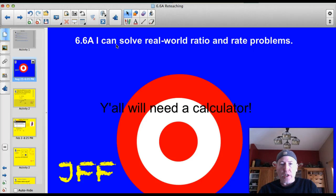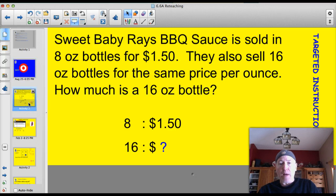Tonight, officially, our target is 6.6a. I can solve real-world ratio and rate problems. You're going to need a calculator, so if you haven't got one, go grab one right now.